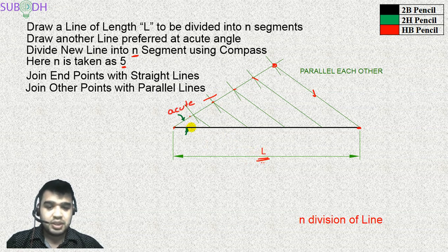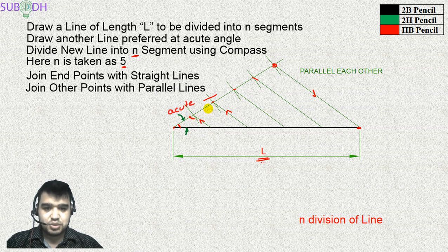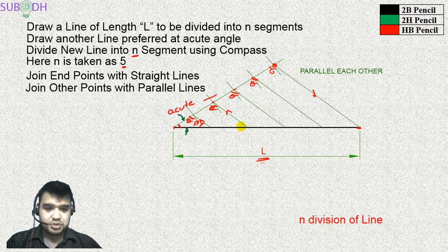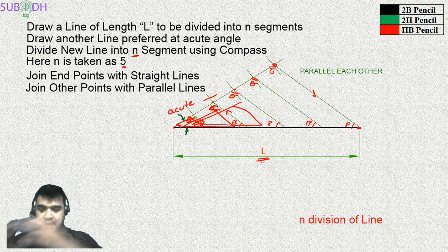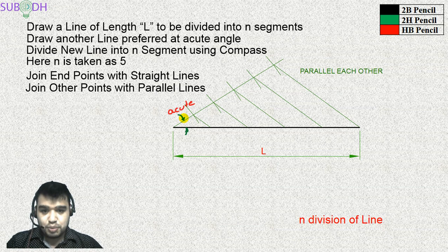The theory behind this method is the law of similar triangles. Because the lines drawn from the auxiliary points are all parallel, the triangles formed share a common angle. Since the lines are parallel, the corresponding angles are equal — call them theta and beta. When all three angles of two triangles are equal, the triangles are similar, and their sides are in equal ratio, which we know from school geometry.